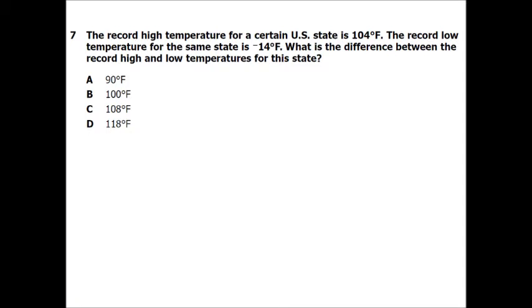Number 7. The record high temperature for a certain US state is 104 degrees Fahrenheit. The record low for the same state is negative 14 degrees Fahrenheit. What is the difference between the record high and the low for this state? Difference means subtraction. So you're going to go 104 minus a negative 14. Stay, change, opposite. So we can change that to 104 plus 14, which is just 118. So that's pretty quick and easy.